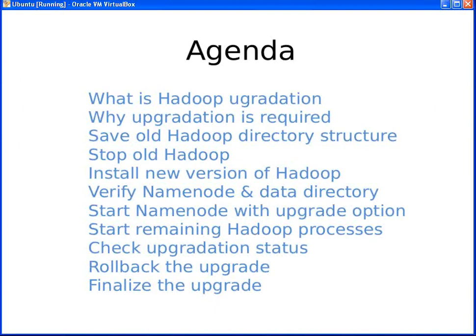The agenda for today's class is: what is Hadoop upgradation, why upgradation is required, save old Hadoop directory structure, stop old Hadoop, install new version of Hadoop, verify name node and data directory, start name node with upgrade option, start remaining Hadoop processes, check upgradation status, then either rollback the upgrade or finalize the upgrade. We will be covering these things in more detail.